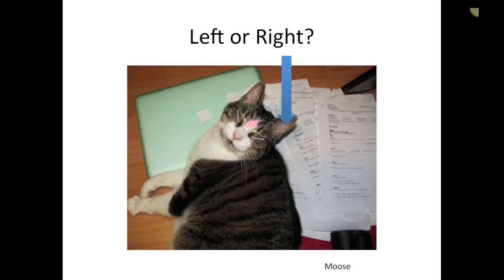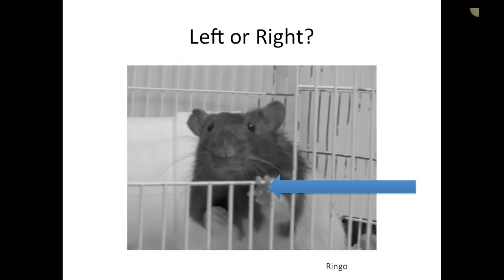This is Moose, my very special cat who I loved very much and who's no longer with me — that's Moose's left ear, and this is how Moose used to distract me when I was marking papers. This other little guy is Ringo, adopted from the vet tech program; unfortunately he died a few years ago as well. That's his left front foot.